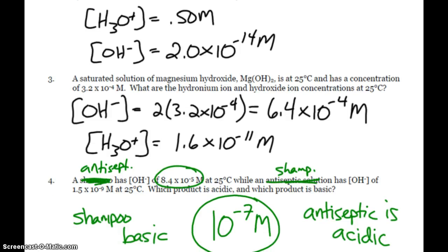Number 3. Magnesium hydroxide. 2 hydroxides. So I have to multiply by 2. That's where I get that concentration. And then, find the hydronium using the ion product constant. So now it's time with fun with pH.